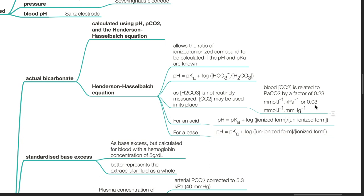Blood carbon dioxide concentration is related to PaCO2 by a factor of 0.23 mmol per litre per kPa, or 0.03 mmol per litre per mmHg. For an acid, pH equals pKa plus log of the concentration of the ionized form divided by concentration of the unionized form. For a base, pH equals pKa plus log of the concentration of the unionized form divided by the concentration of the ionized form.